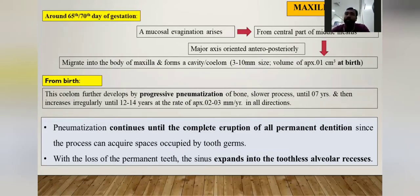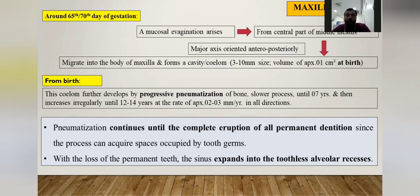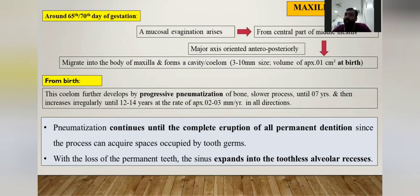Regarding embryology, around the 65th to 70th day of gestation, a mucosal evagination arises from the central part of the middle meatus of the nose, oriented axially in an anteroposterior direction. This mucosal evagination migrates into the body of the maxilla, forming a small cavity of about one cubic centimeter, acquiring a size of about three to ten millimeters at birth. Further development occurs by progressive pneumatization — meaning the air-filled cavity expands — continuing until seven years of age and then at a rate of about two to three millimeters per year in all directions until age 12 to 14, acquiring the quadrangular pyramidal shape.